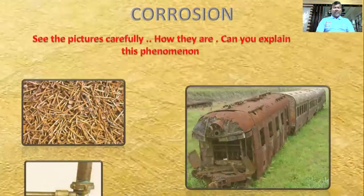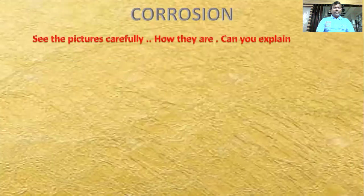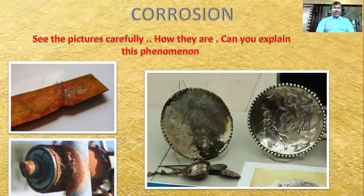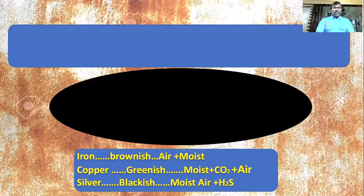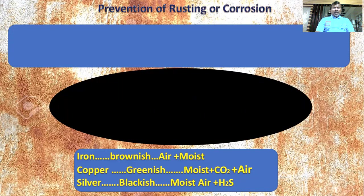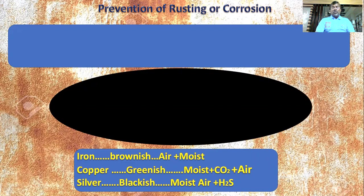Now let us see what happens when metals start corrosion — they are eaten up and decay, causing lots of damage to the metal and to materials made of these metals. Rusting and corrosion are different: rusting refers specifically to iron, whereas corrosion refers to all remaining metals.